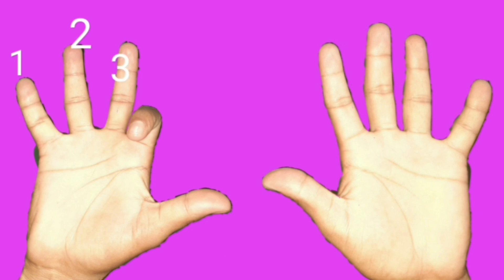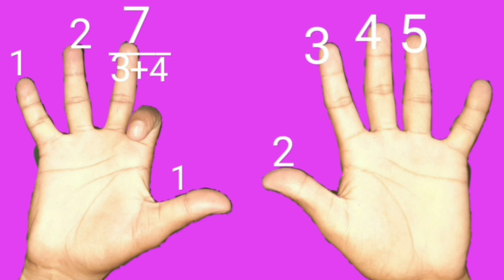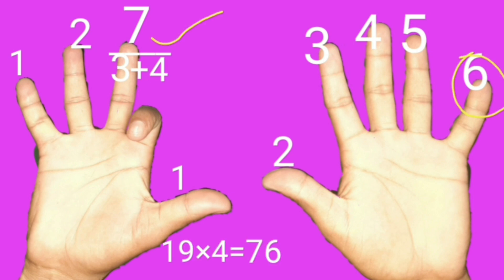Three fingers are on the left side of the bent finger. Three's next digit is 4. 3 plus 4 is 7. Now we count how many fingers are on the right side of the bent finger: 1, 2, 3, 4, 5, 6. Left side 7 is there, right side 6 is there. So 19 times 4 is 76.